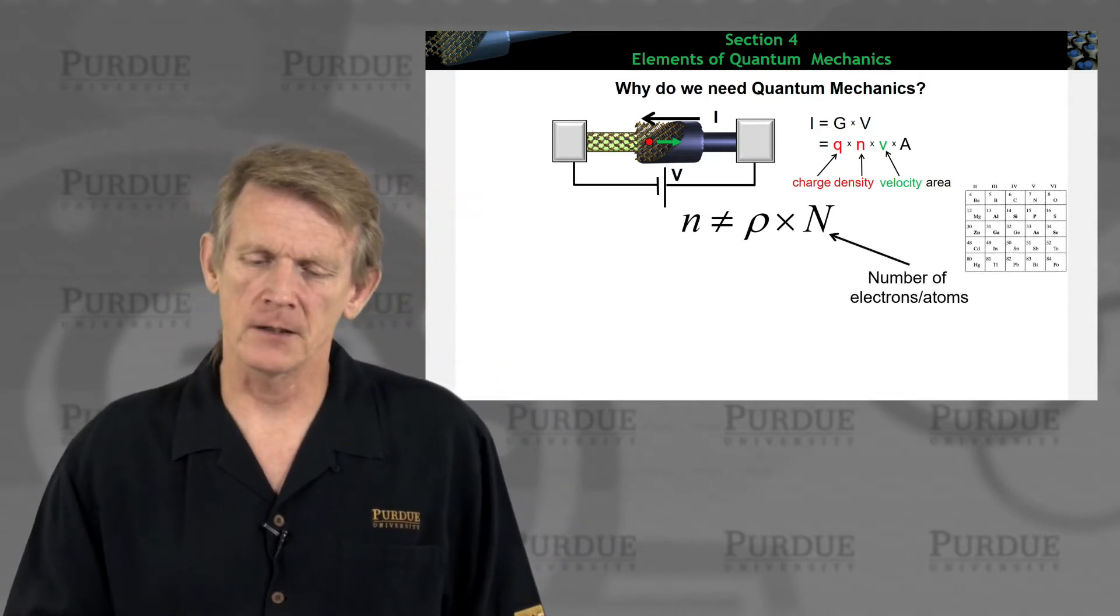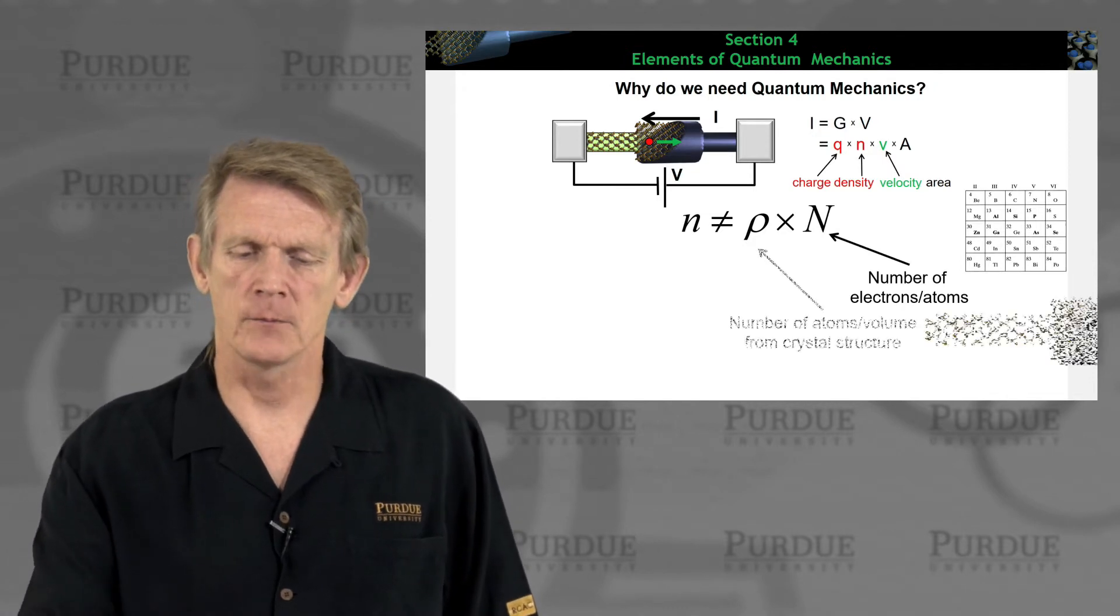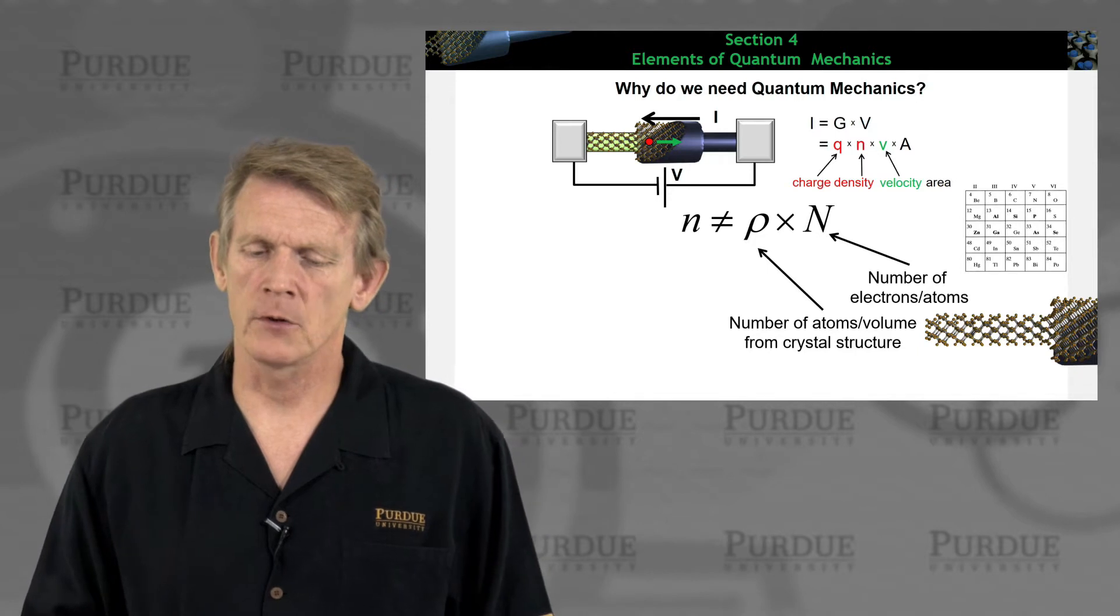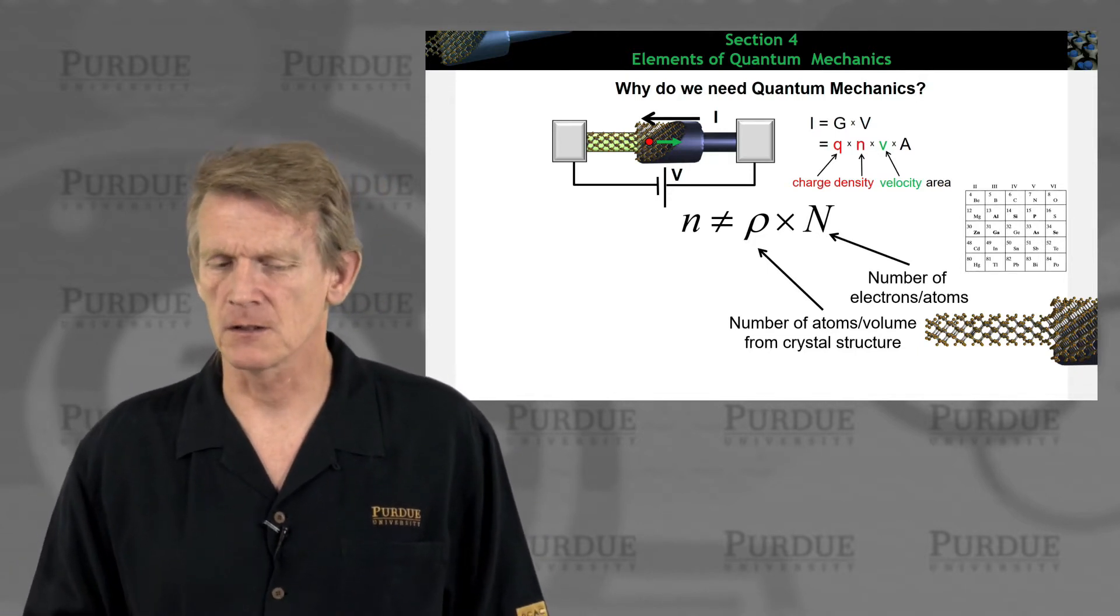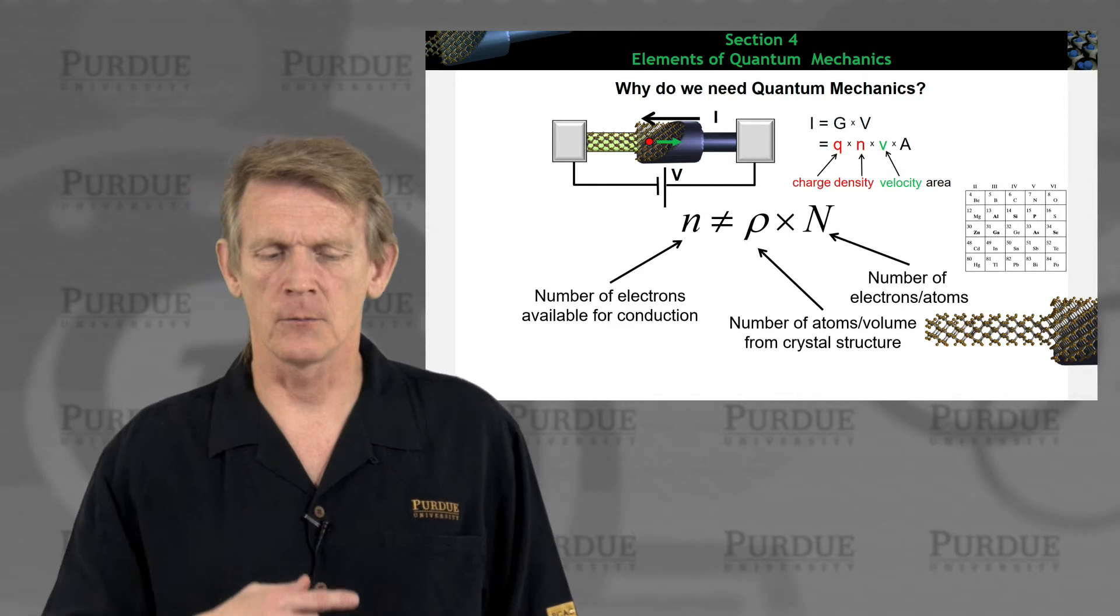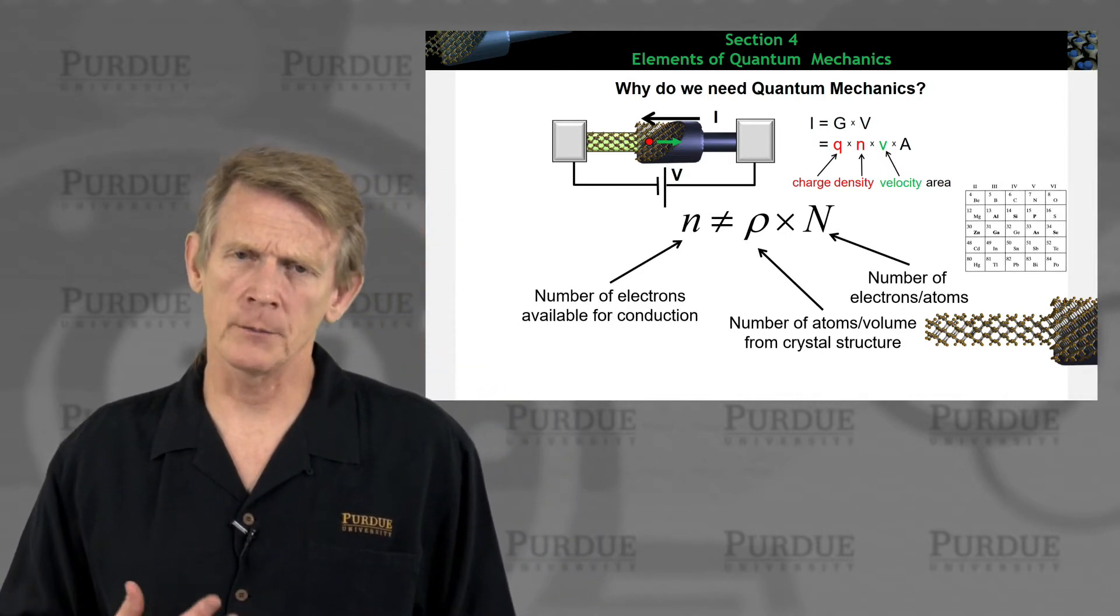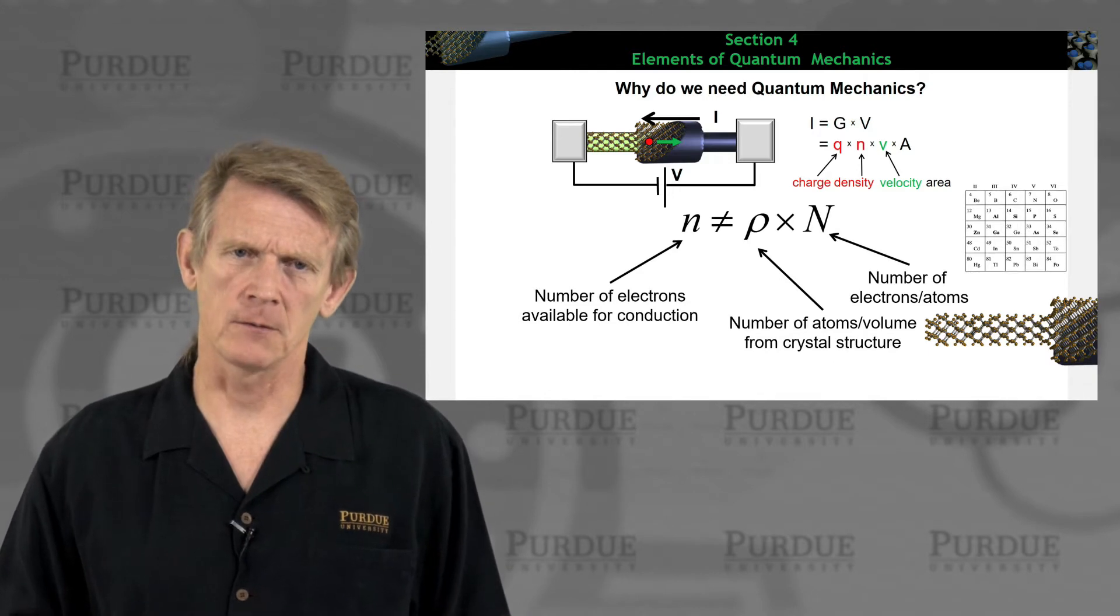The number of electrons per atom multiplied by density, which is the number of atoms per volume from crystal structure, does not equal the number of electrons available for conduction. We need quantum mechanics to begin to describe this.